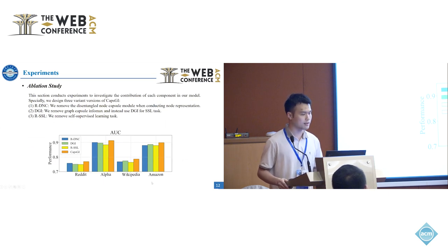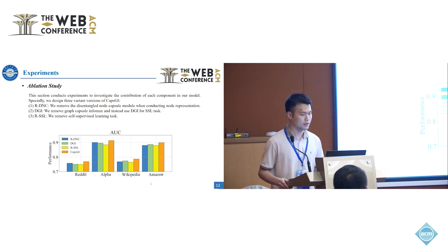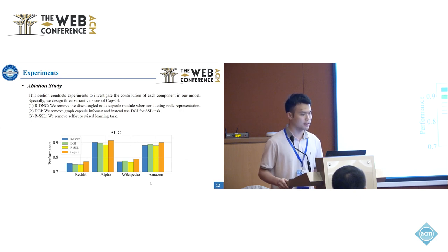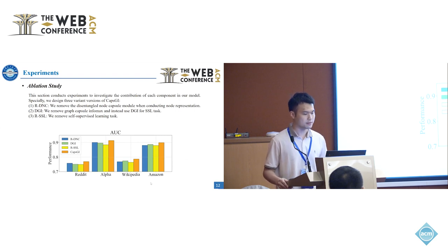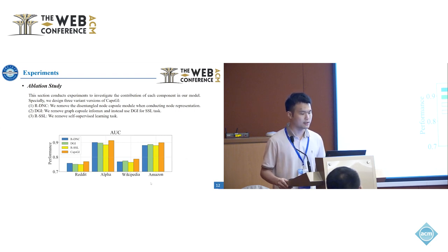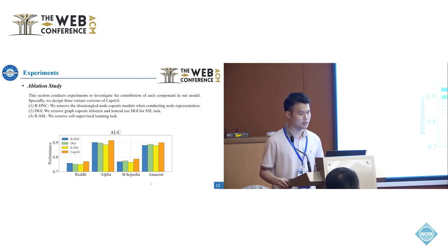We conducted an ablation study with three variants of our method. The first, RDNC, removes the disentangled node capsule module from node representation. The second replaces Capsule Graph InfoMax with DGI for the self-supervised learning task. The third, rSSL, removes the self-supervised learning task entirely. The results show that each component plays an important role and they work together to improve performance.